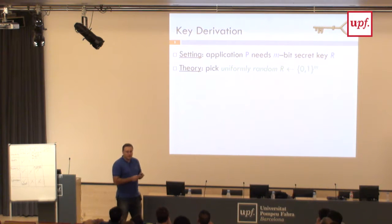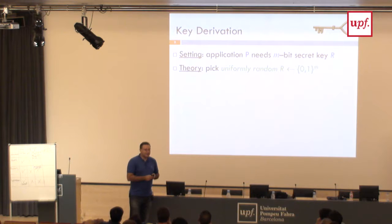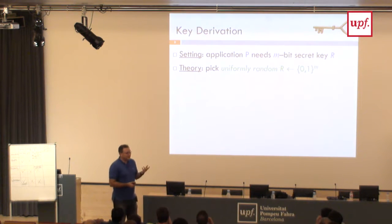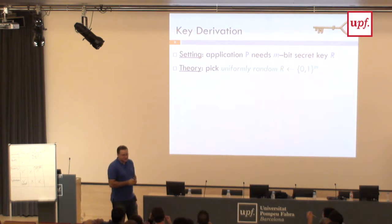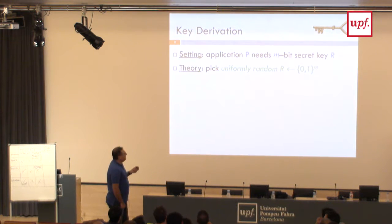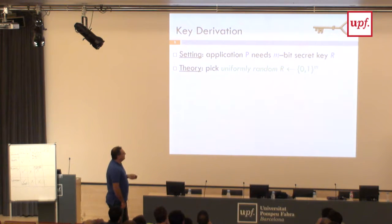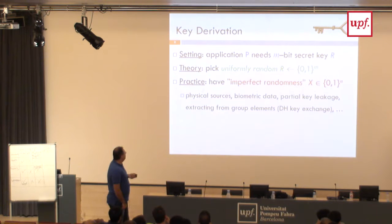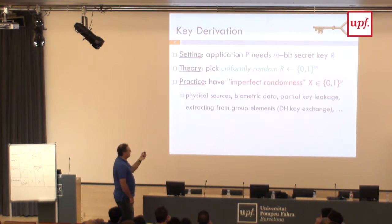This is the setting of key derivation. Local randomness — I'm not spelling it out explicitly on the slide, but it will be key for our possibility result, because otherwise a lot of things are impossible. We have an application key p which needs an m-bit secret key r. In theory we want r to be a uniformly random m-bit string, and in practice we have this imperfect source of randomness. There are many applications where this is the case.